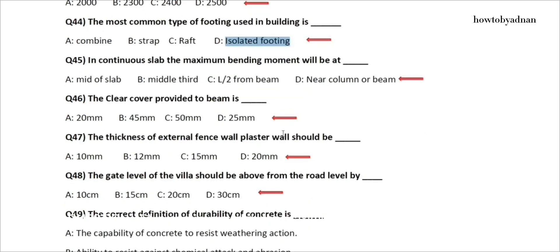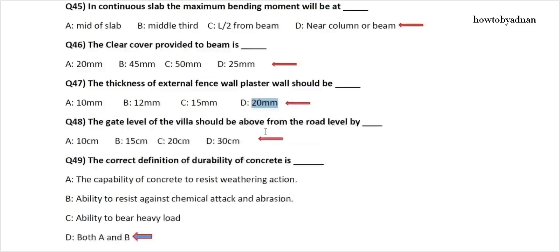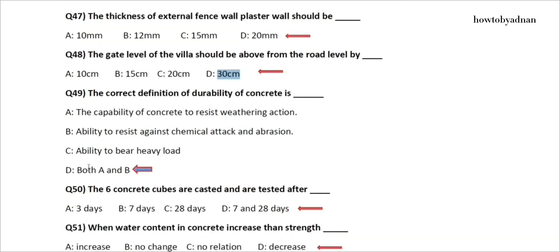Question 45: In a continuous slab, the maximum bending moment will be at? The answer is option D: Near column or beam. Question 46: The clear cover provided to a beam is? The answer is option D: 25 millimeters. Question 47: The thickness of external fence wall plaster should be? The answer is option D: 20 millimeters. Question 48: The gate level of the villa should be above the road level by? The answer is option D: 30 centimeters. Question 49: The correct definition of durability of concrete is? The answer is option D: Both A and B.